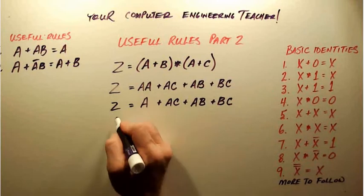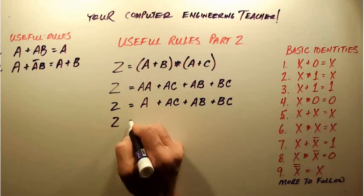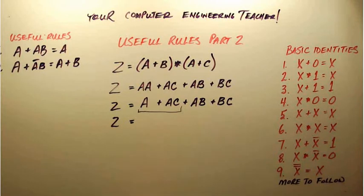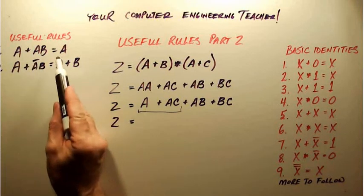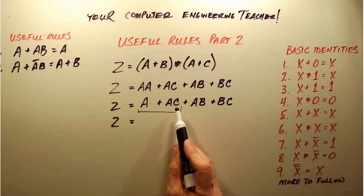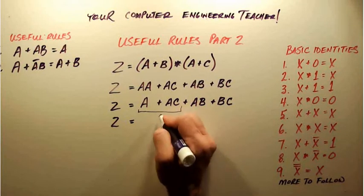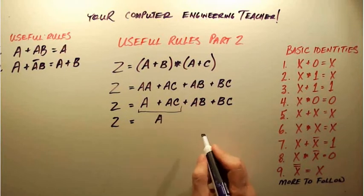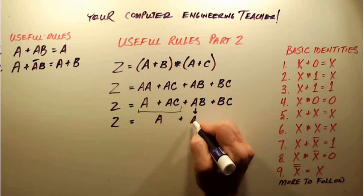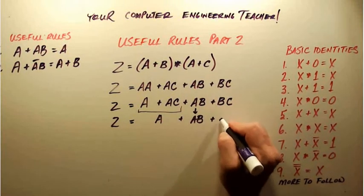Next step, we are going to look at the first two terms here and say A plus AC. That looks a lot like our useful rule number one: A plus AB is equal to A. We've got A plus AC, so that is equal to A. These ones here I can just rewrite, so this will be plus AB, this will be plus BC.